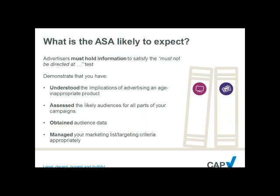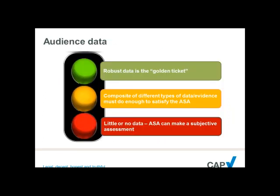Alternatively, if you are using marketing lists or targeting criteria, you need to demonstrate to the ASA that you have removed anyone who is under 18 from a marketing list, or that you have used targeting criteria which are likely to relate to people who are of age to receive the marketing communication — over 18, etc. — and people in criteria which do not indicate that children are the likely recipients.